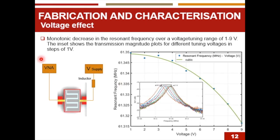Fabrication characterization: the voltage effect here. In measurement, we connected the resonator from the sense side to the VNA and from the electrode to the voltage supply via inductor. And the frequency changes were recorded due to the voltage change. As we can see from this diagram here, there is a monotonic decrease in the resonant frequency over a voltage tuning range from 1 to 9 volts. The inset shows the transmission magnitude plots for different tuning voltages in steps of 1 volt.